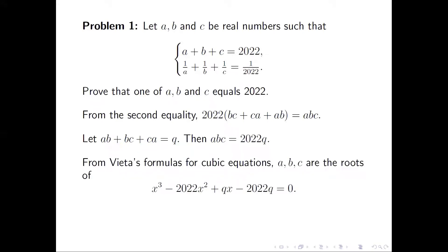From Vieta's formulas for cubic equations, A, B, and C are the roots of the cubic equation x³ - 2022x² + Qx - 2022Q = 0. This can be easily factored: (x - 2022)(x² + Q) = 0. This always has a root of 2022.